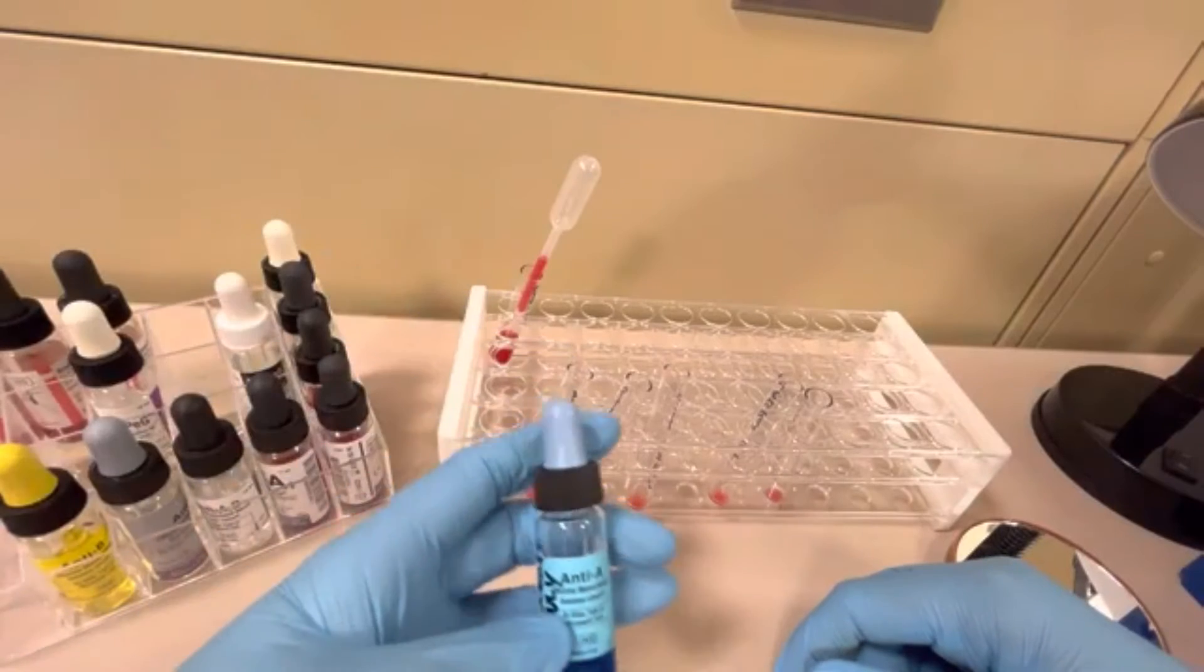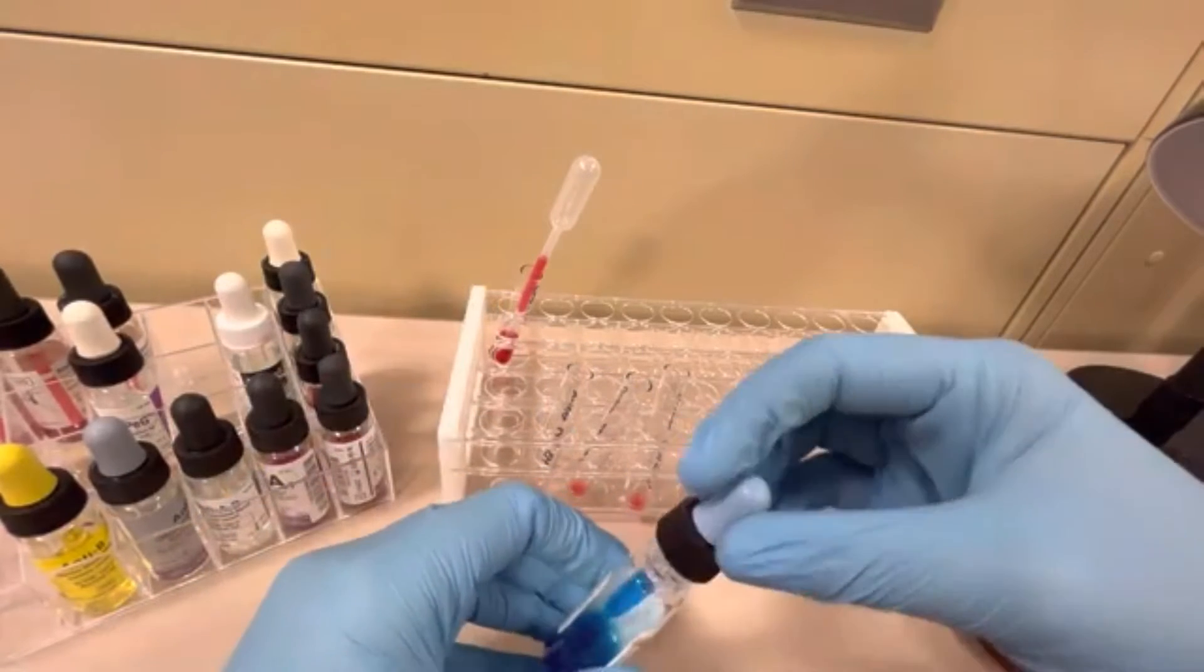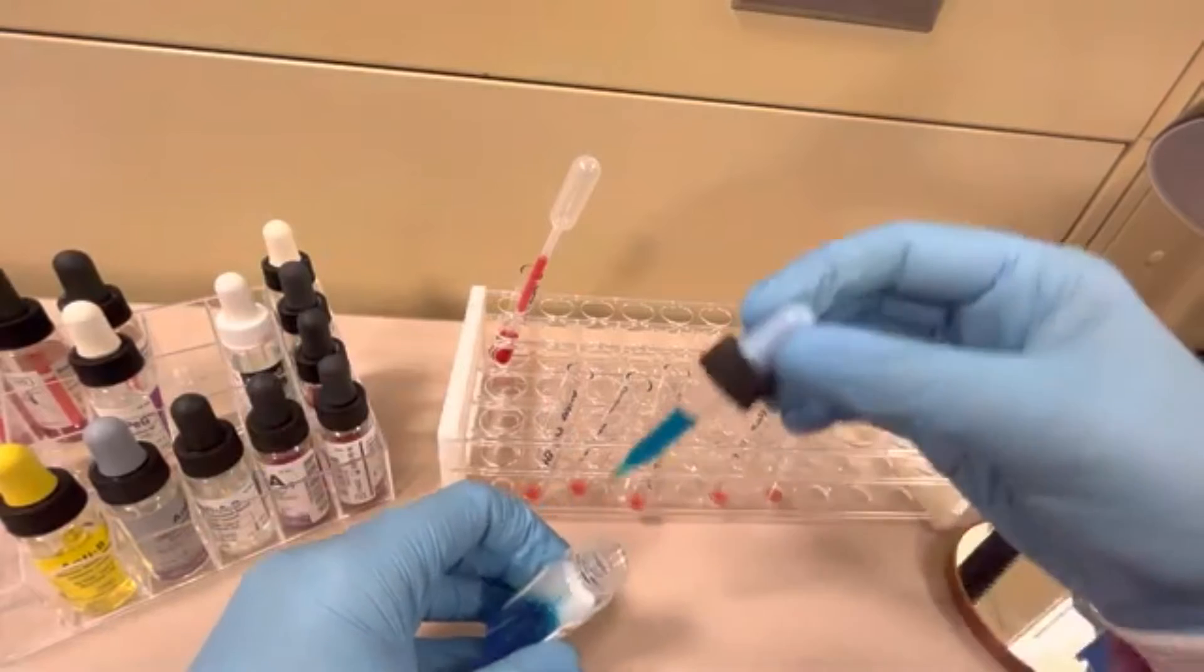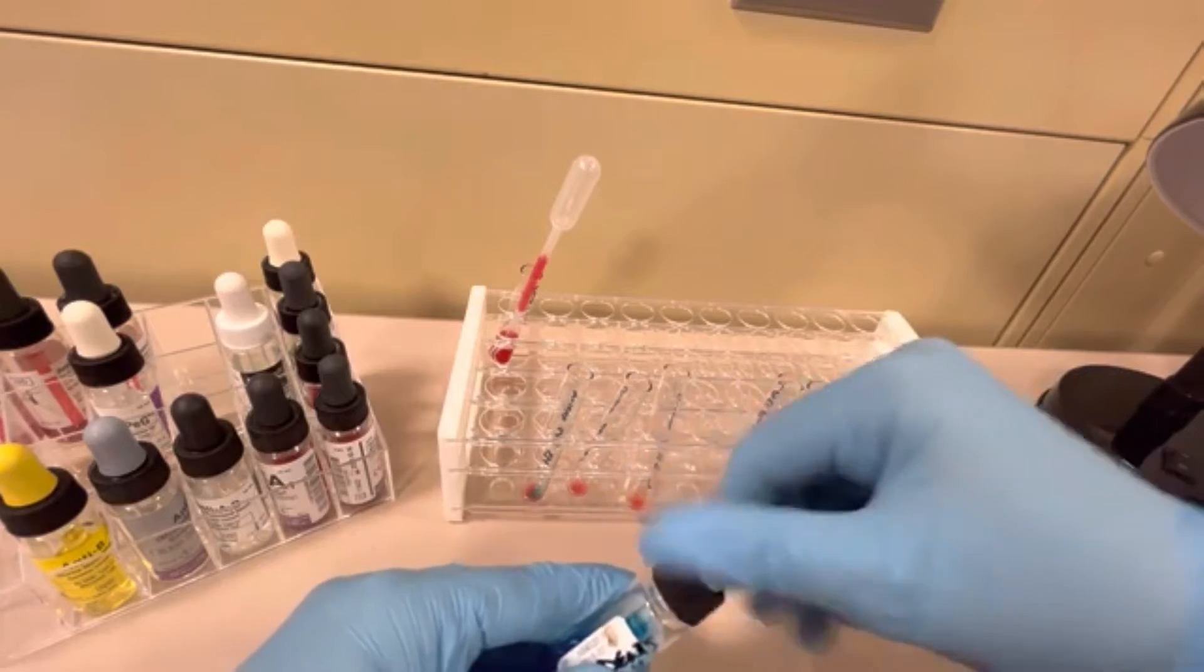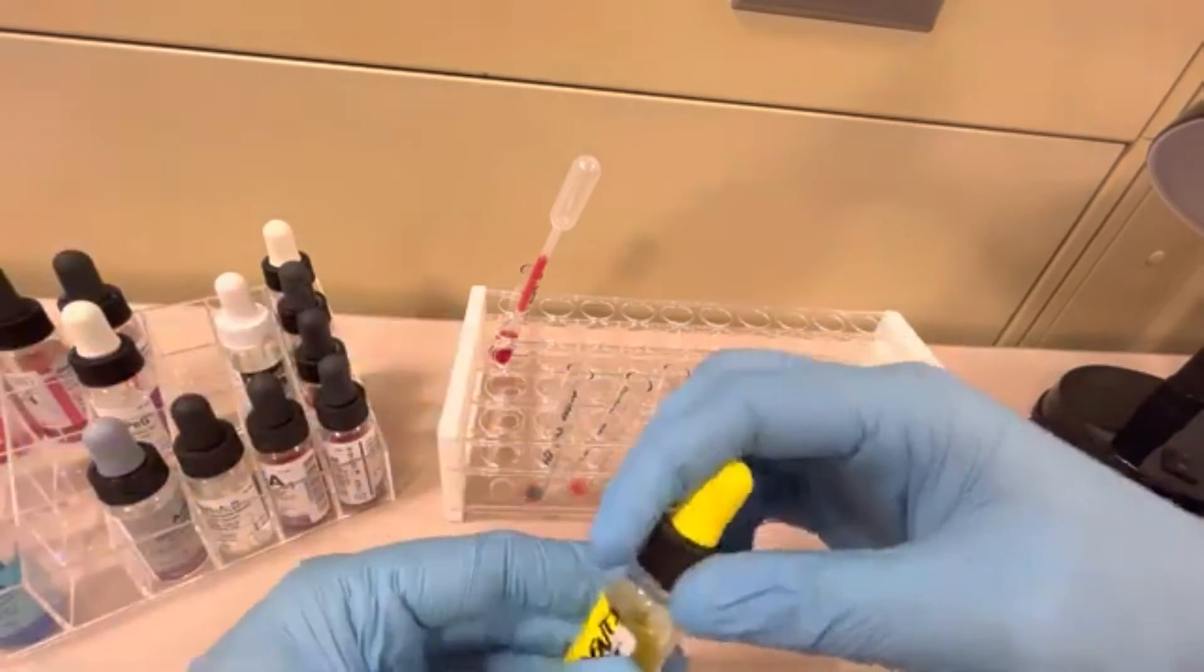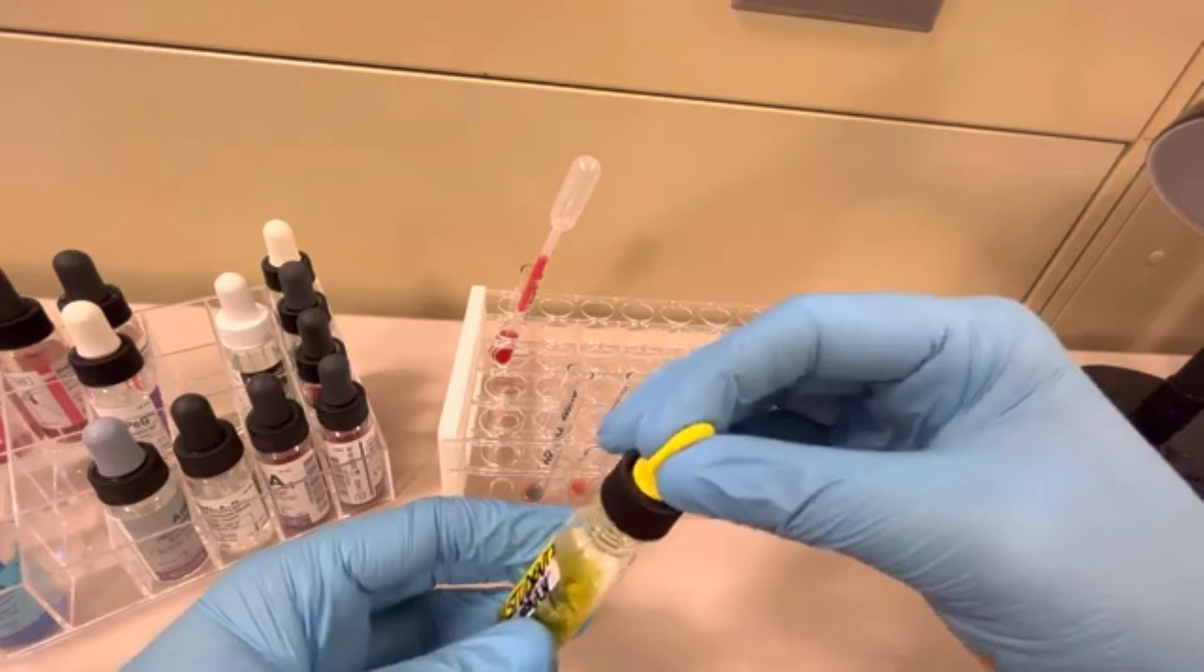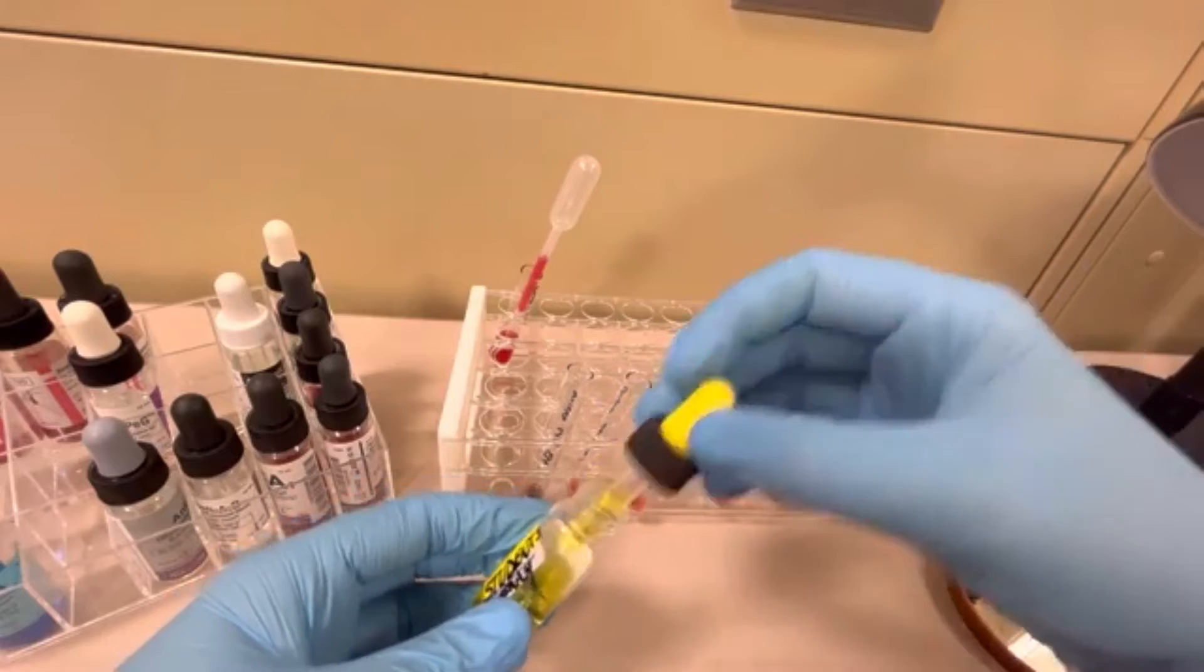Now what is next is we're actually going to do the testing, adding in the reagent. The first reagent I'm going to grab is anti-A. This is anti-A antisera. I'm going to be putting one drop of it in the anti-A tube. And then I'm going to take anti-B and put that in my anti-B tube.